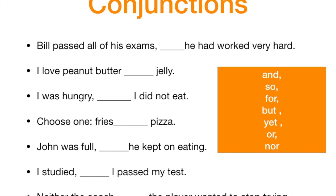It doesn't have to be perfect, but pause for a second and try to figure out which conjunction, which joining word goes into each of these sentences. I'll be waiting for you to take a minute. Okay, now you're back. Let's see which word can complete these sentences. Bill passed all of his exams — for he had worked very hard. Notice this conjunction 'for' is like the word 'because.'